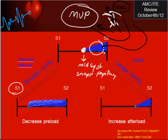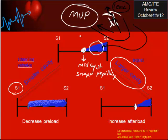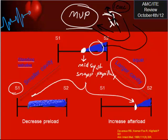Maneuvers-wise - which is very high yield and easy - anything that makes the cardiac cavity larger will decrease the murmur. Look at the mid-systolic click: in the control state of mitral valve prolapse, you see a mid-systolic click right in the middle of systole. When the cavity is larger, you will see the click usually at the end of systole.